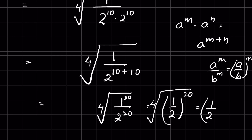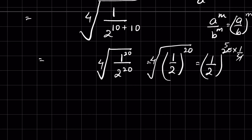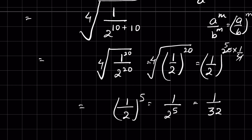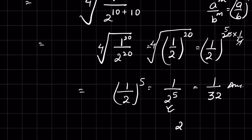The fourth root means raising to the power of 1 upon 4, and 4 times 5 is 20, so this equals 1 upon 2 whole raised to the power 5, or 1 upon 2 raised to the power 5, which equals 1 upon 32. This is our answer, and we can also write it as 2 raised to the power minus 5 as a negative exponent. Like and subscribe, thanks for watching.